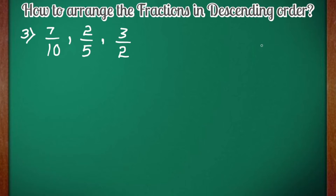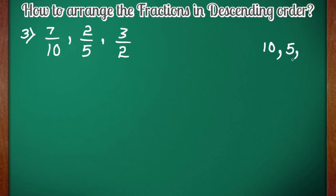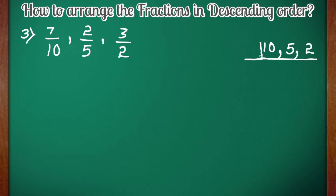For that, we will take the LCM of the denominators, which are 10, 5, and 2. To find their LCM, we have to divide them with the same number at the same time, and keep dividing until they are completely divided. Let us divide 10, 5, and 2 by 2.